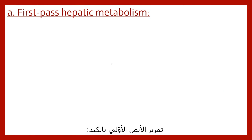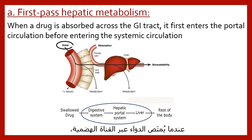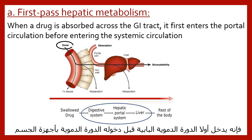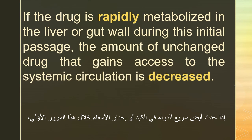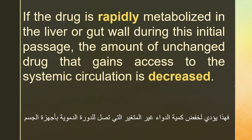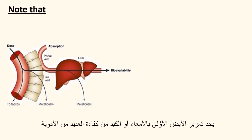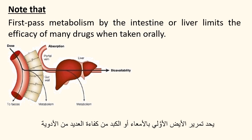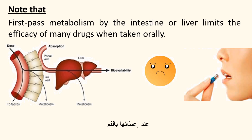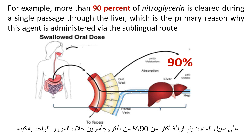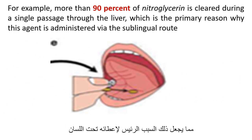First-pass hepatic metabolism: when a drug is absorbed across the GI tract, it first enters the portal circulation before entering the systemic circulation. If the drug is rapidly metabolized in the liver or gut wall during this initial passage, the amount of unchanged drug that gains access to the systemic circulation is decreased. First-pass metabolism by the intestine or liver limits the efficacy of many drugs when taken orally. For example, more than 90% of nitroglycerin is cleared during a single passage through the liver, which is the primary reason why this agent is administered via the sublingual route.